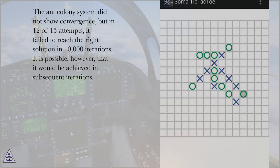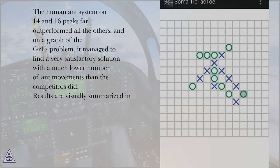It is possible, however, that it would be achieved in subsequent iterations. The human ant system on 14 and 16 peaks far outperformed all the others, and on a graph of the GR 17 problem, it managed to find a very satisfactory solution with a much lower number of ant movements than the competitors did.